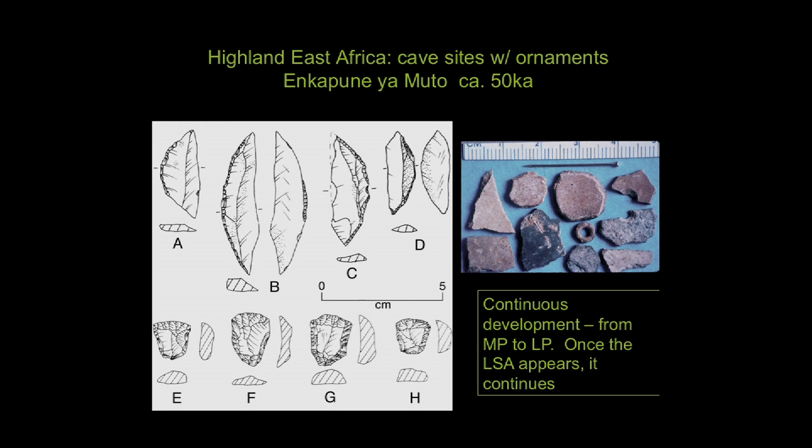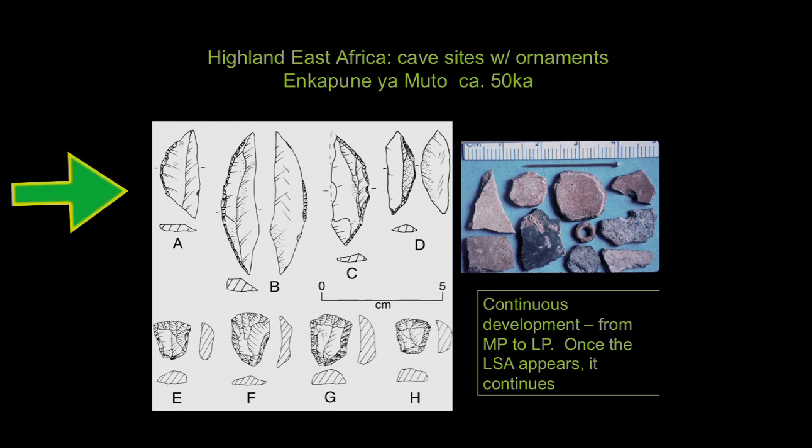This is Nkapanayamuto in Highland Kenya, about 50,000 years ago. We have not only ostrich eggshell beads, but the manufacture of ostrich eggshell beads, along with these very large geometric forms. Once these geometric forms come in, they stay — it keeps developing in that direction into the later Stone Age. We don't see a disappearance of these geometric forms and then their reappearance later.